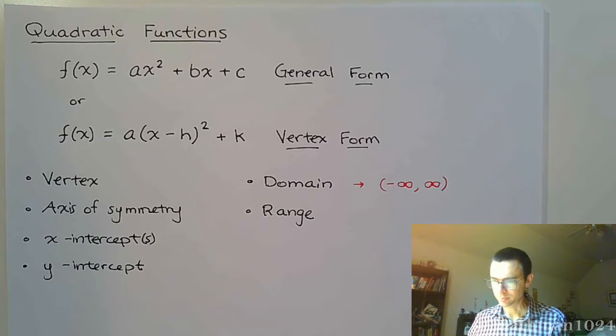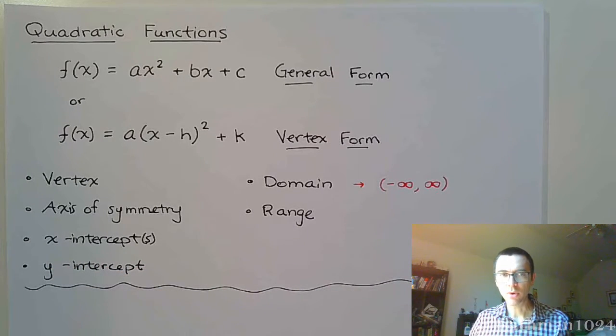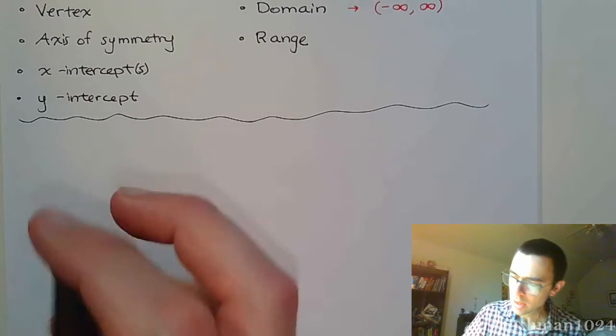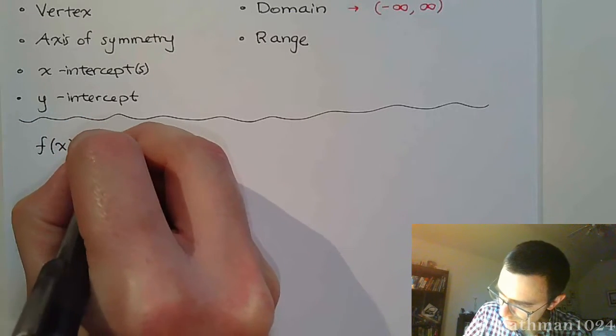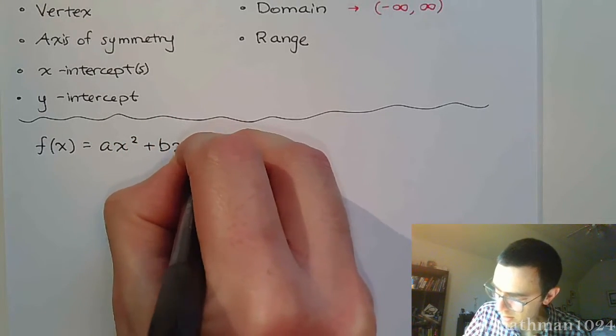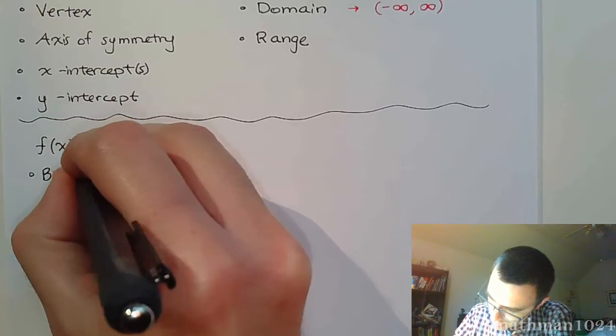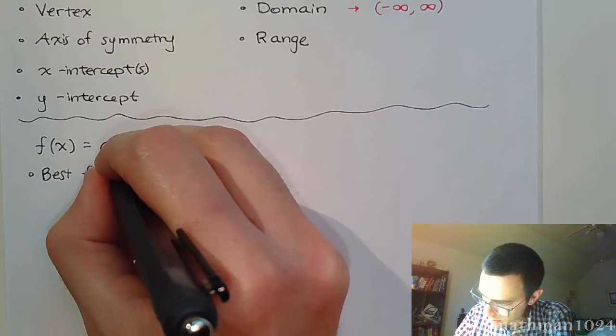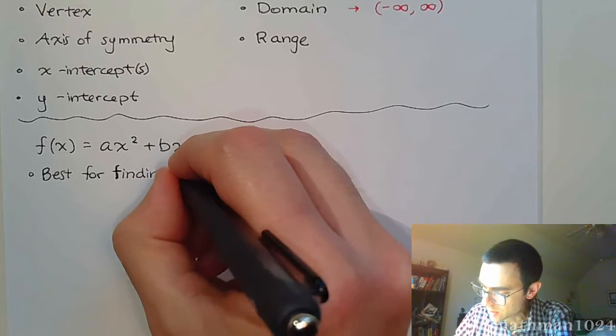So let's talk about these two different forms and what they're good for and what they kind of struggle with. So for that general form, f(x) equals ax² plus bx plus c, this guy is the best for finding intercepts.